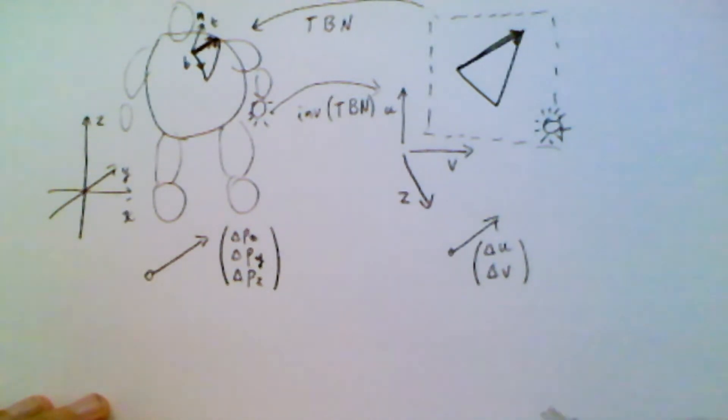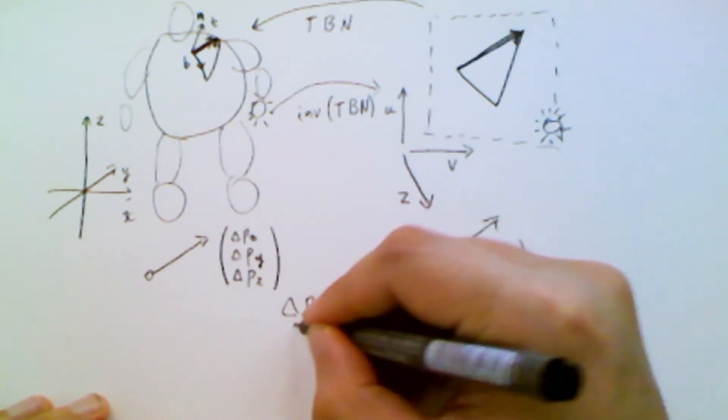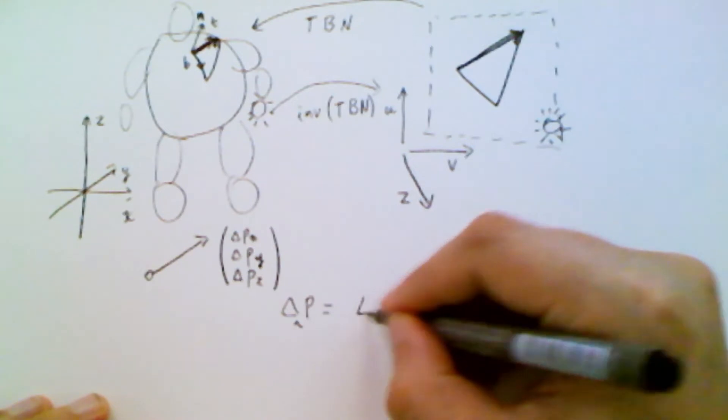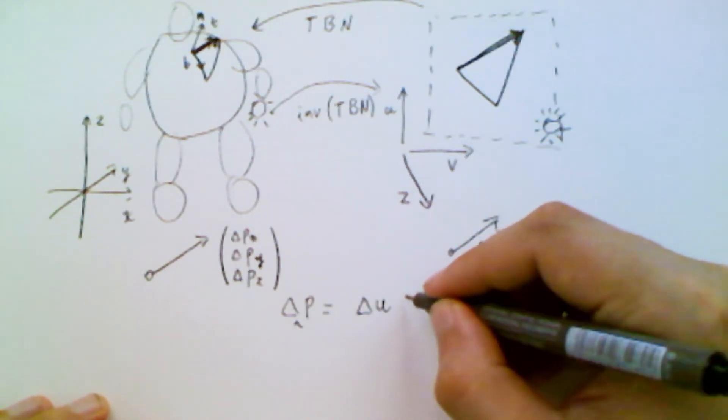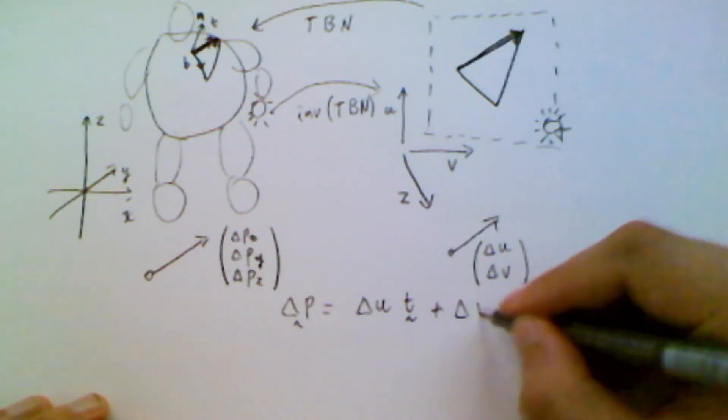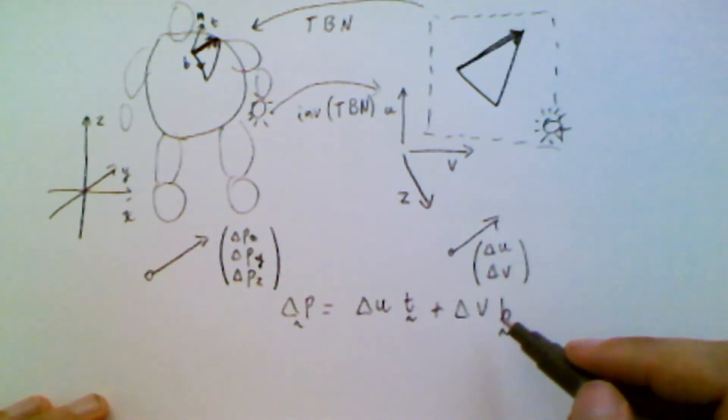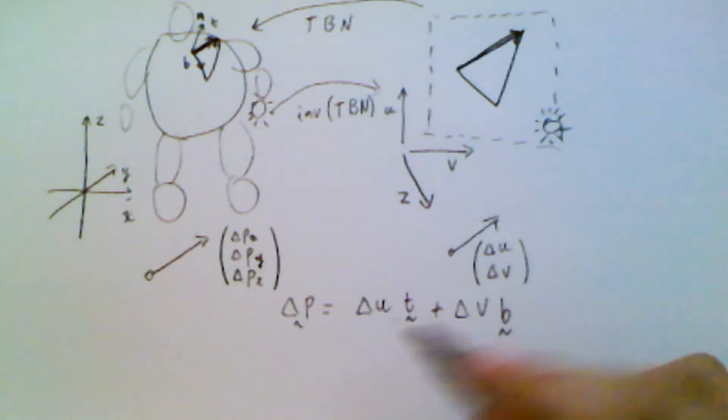And then the relationship is that the overall change in position is if we take the change in U and multiply it by the tangent vector, which is unknown at this point. And then we take the change in V and multiply it by the bi tangent vector, which is also unknown. Then that linear relationship, the combination of those two direction vectors gives our change in direction here, more or less.